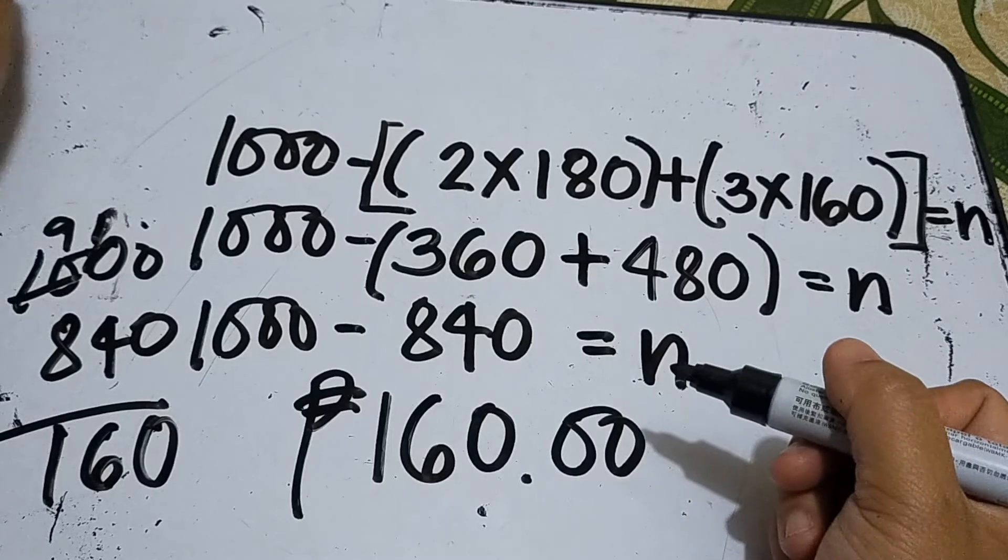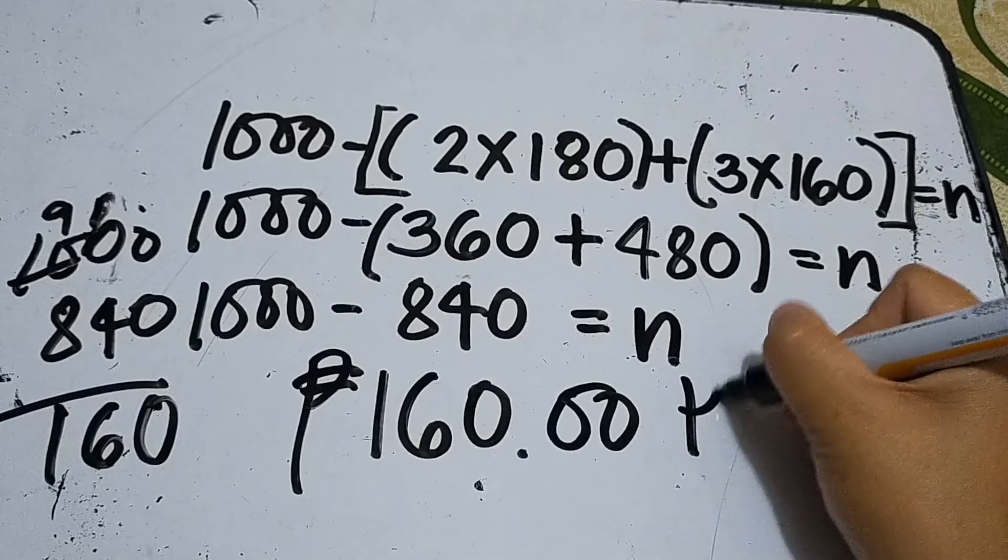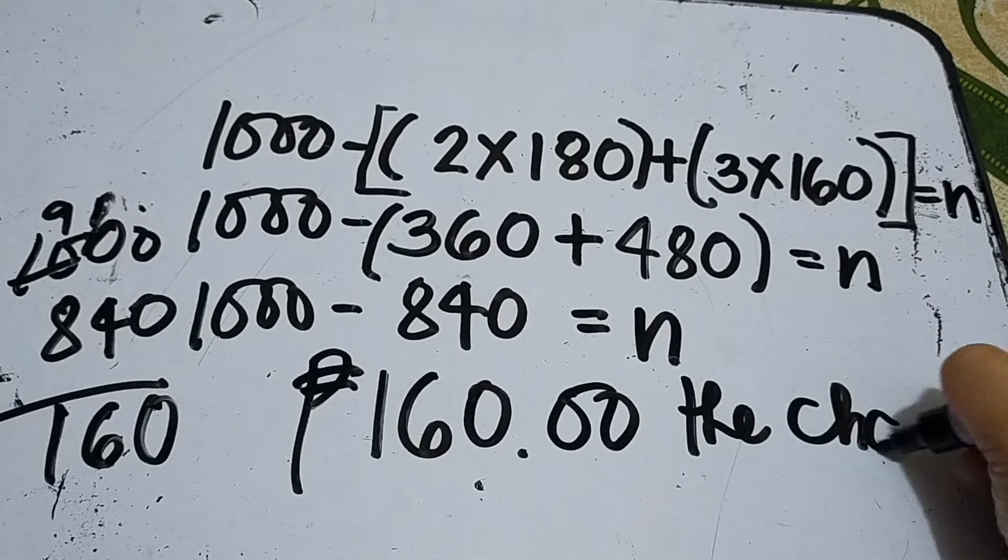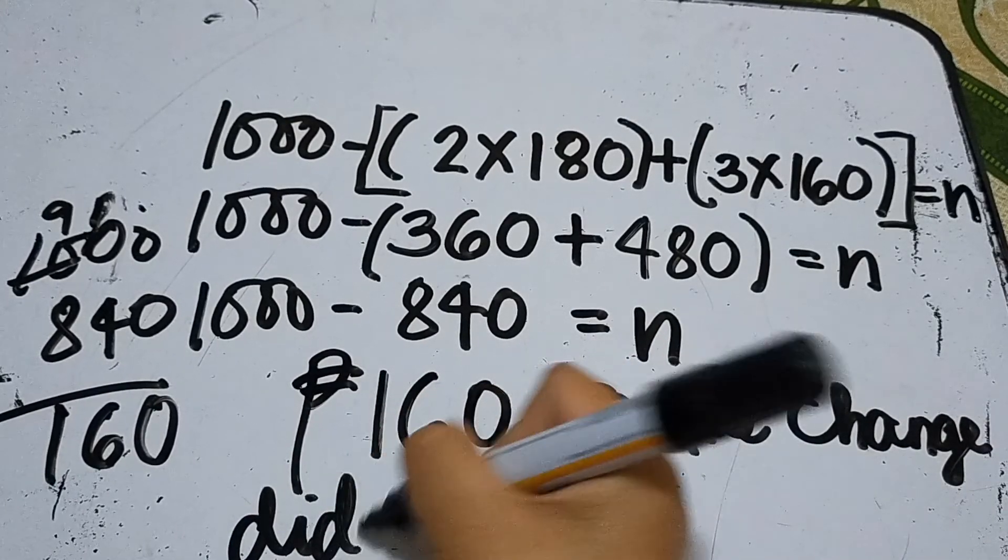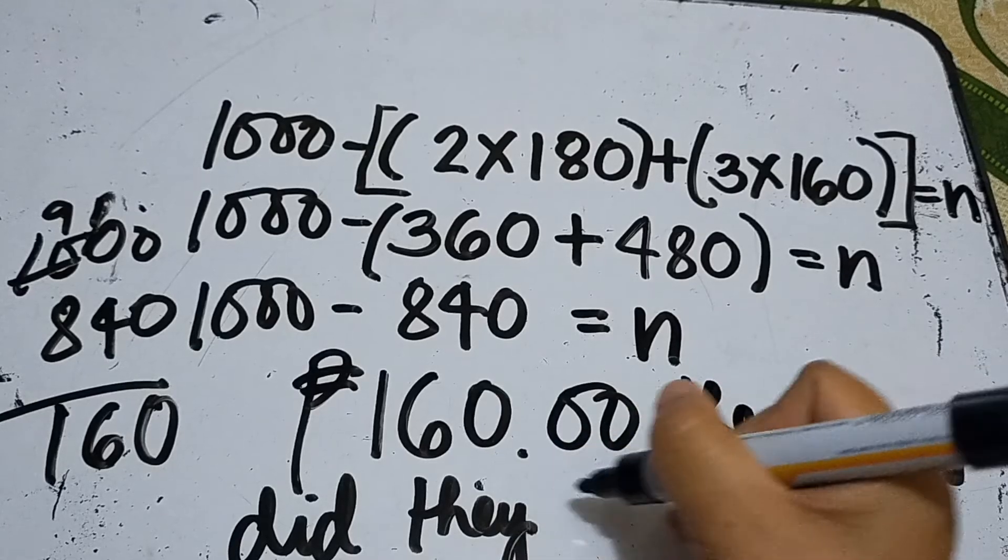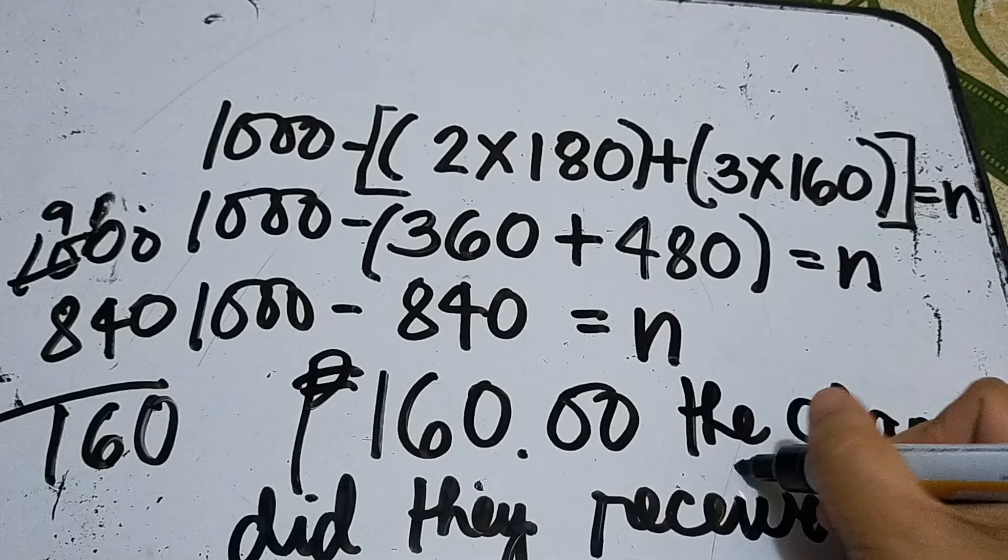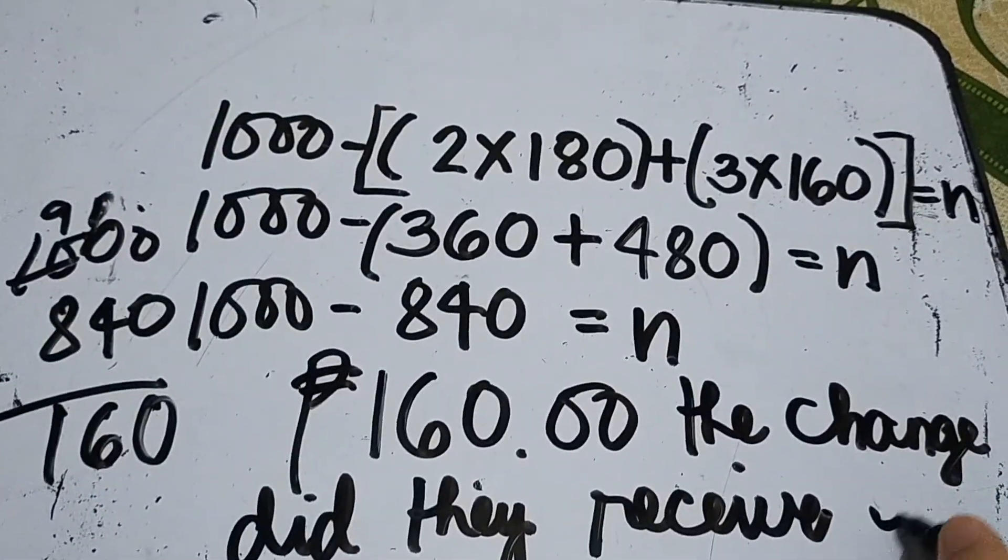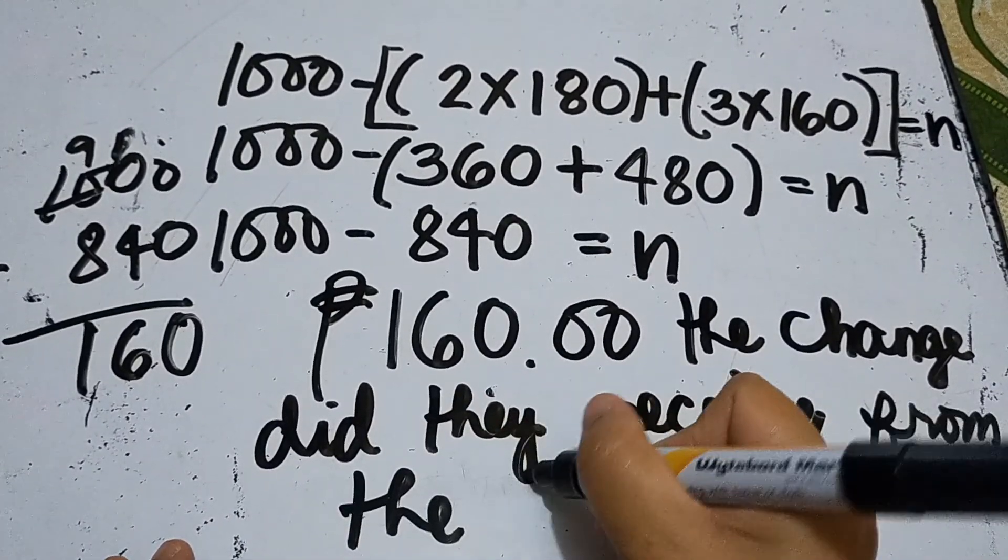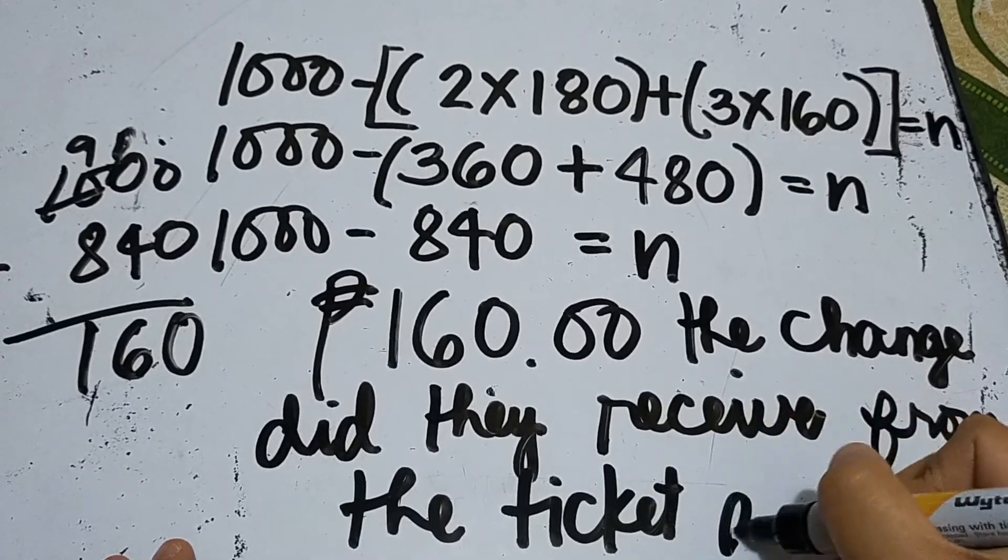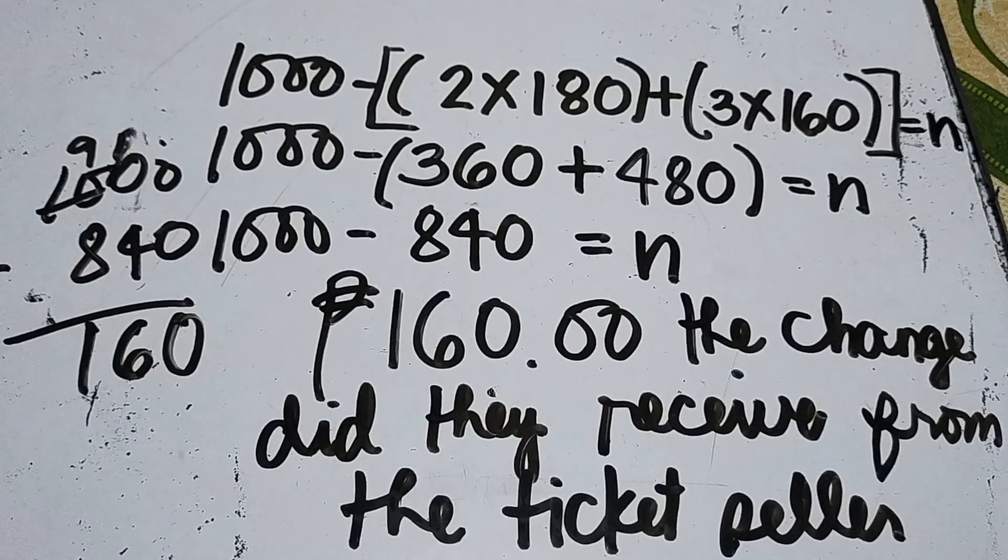When you write it in the answer part, it can't just be 160 pesos because it needs a label: 160 pesos is the change did they receive from the ticket seller. Alright, that's all for now. Thank you for watching. Bye bye!